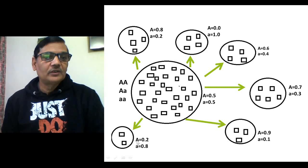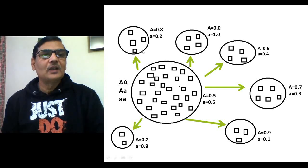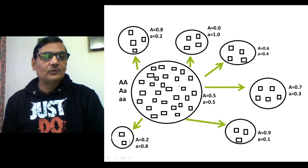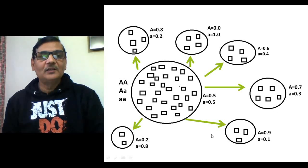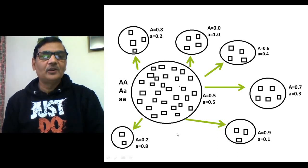Anything may happen, which is why it is called random genetic drift — there may be random change from the existing frequency in the founded population. You do not know what will happen; the composition of the newly founded population will actually depend on the members which come and found it. This is the meaning of random genetic drift: because of the sampling effect, there may be random change in allele frequencies totally different from the ancestral population.